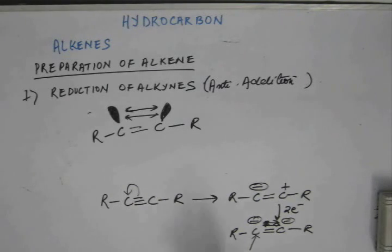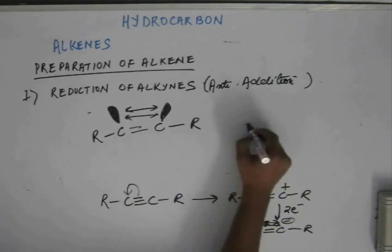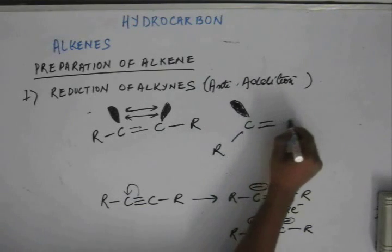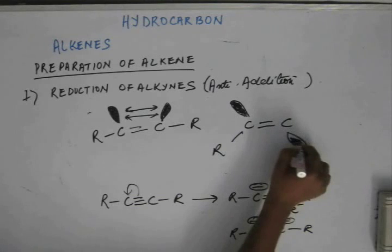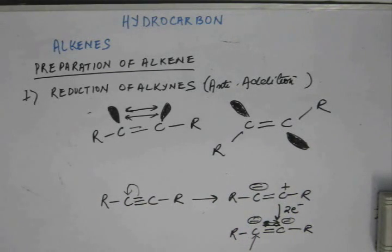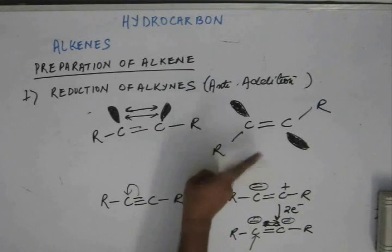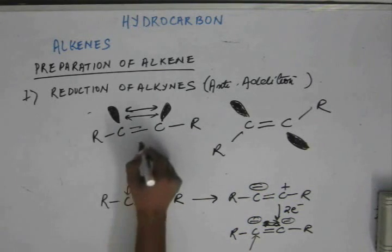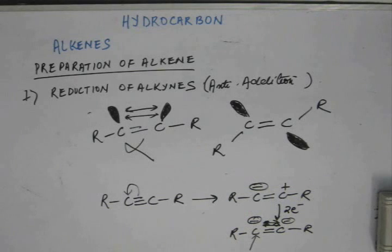When the negative charge is formed in a different orientation — with the p orbital on the other plane of the pi bond — that repulsion is no more present. So this orientation exists. The charge ends up on an sp2-hybridized carbon, and this leads to the anti-addition product, giving a trans alkene as the final product of sodium in liquid ammonia reduction of alkyne.